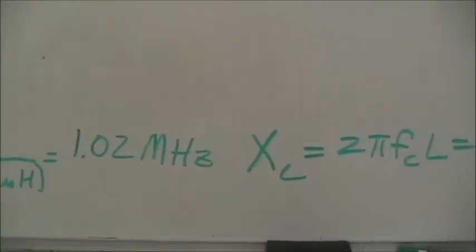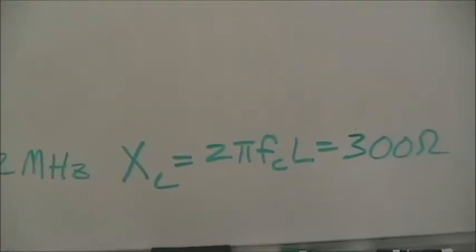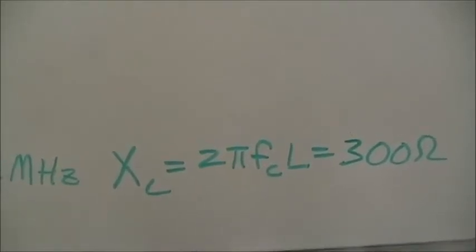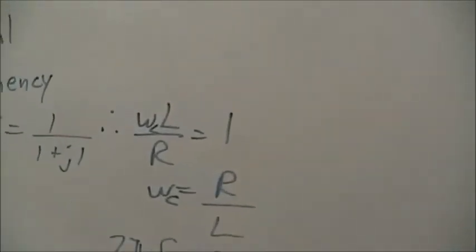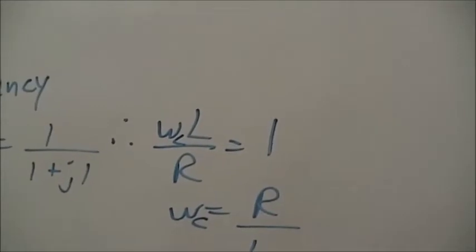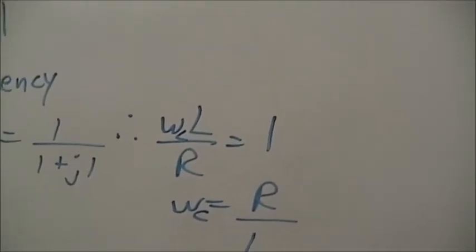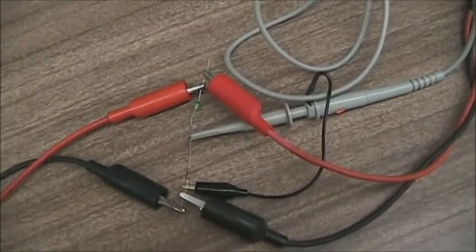We can check XL to be 2πFc times L equals 300 ohms, which had to be because ωL over R had to be 1. So we'll check this in the lab.